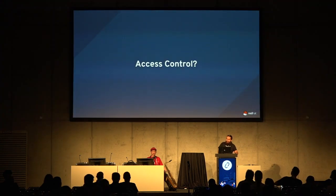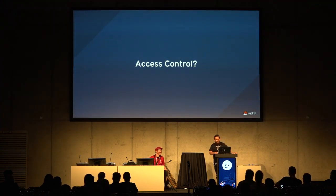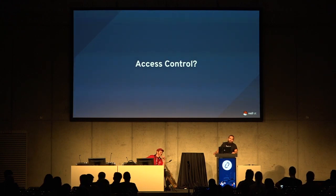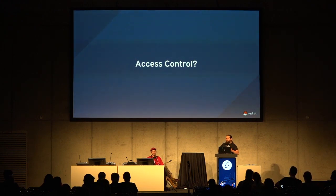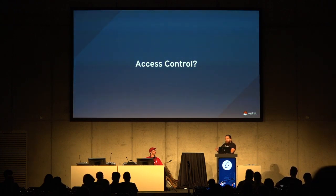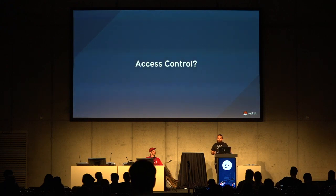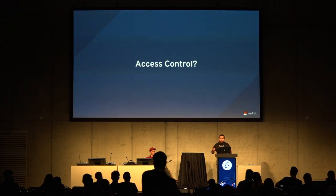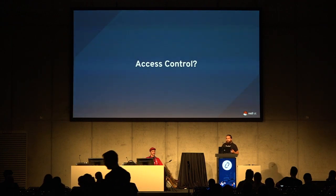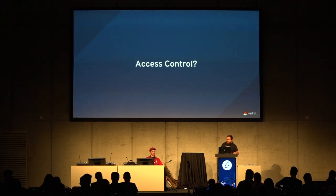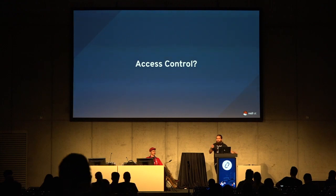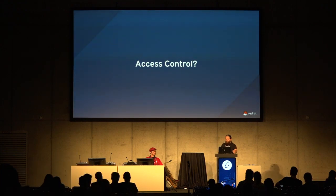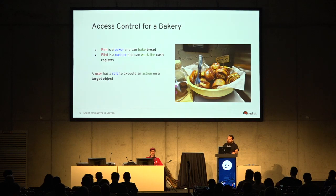Access control — who can do what, right? Usually you assign roles or attributes to your users, or to whoever wants to do something in a system, and you'll have rules to define who can do what. These rules are enforced, and we call this authorization, and that's the gist of access control. You can search more in Wikipedia, but for our purposes this is the main thing.